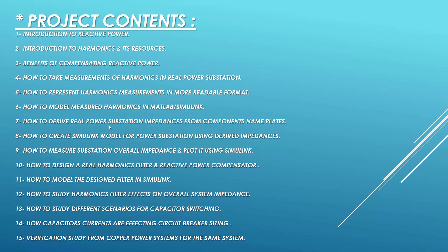Then, if you have a real power substation, how are you going to make an impedance single line diagram instead of a power or operational single line diagram? You have to derive all parameters for each and every component using its nameplate. Here I'm going to show you how to derive the parameters of each component — real components inside the substation like power transformers, GIS switchgears, cables, etc. — and represent them as impedances.